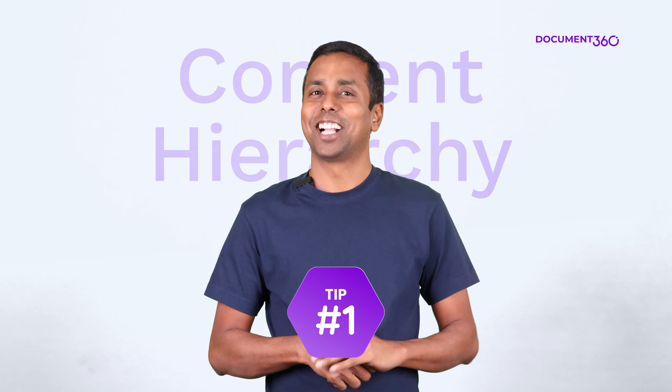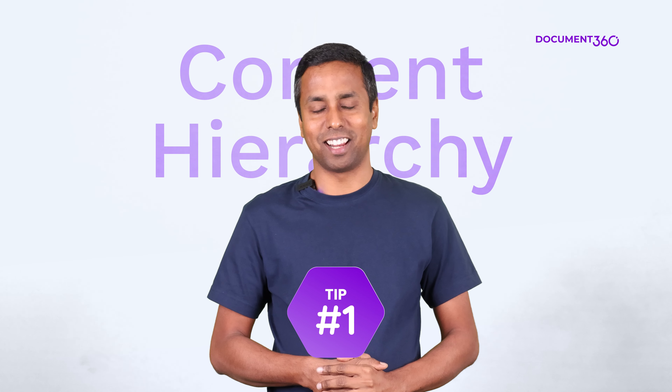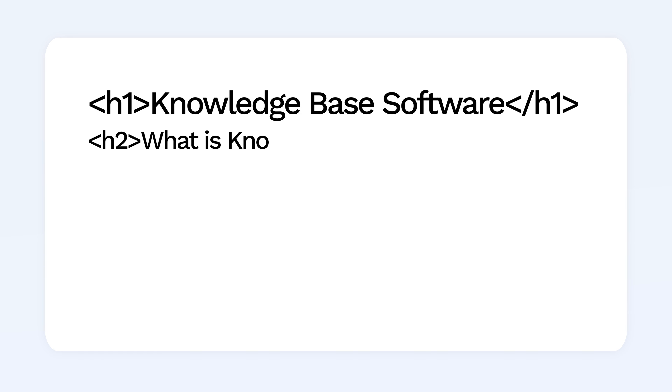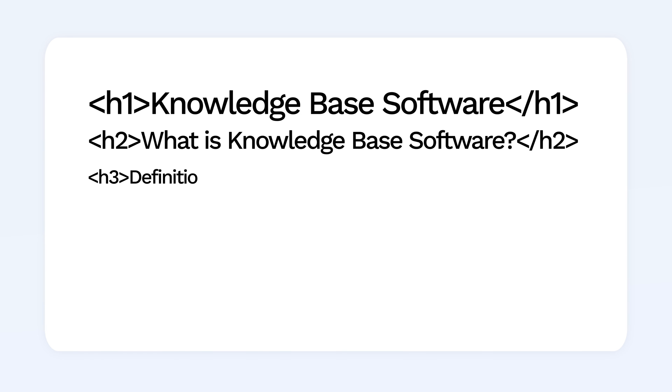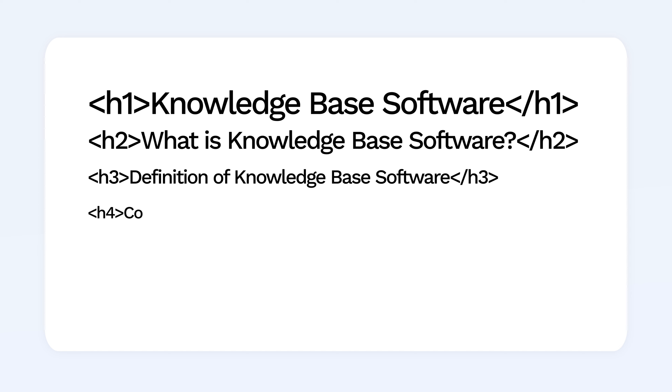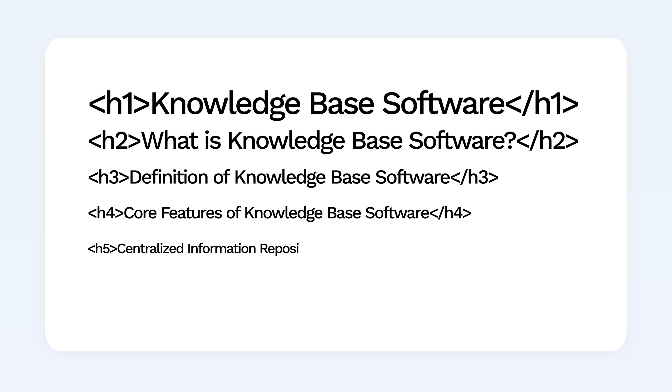Let's explore some tips to refactor your knowledge base content. Tip one: content hierarchy. Organizing information hierarchically is important for Gen AI tools to get a holistic perspective of your knowledge base content. Ensure your content is structured from H1 to H6 tags.